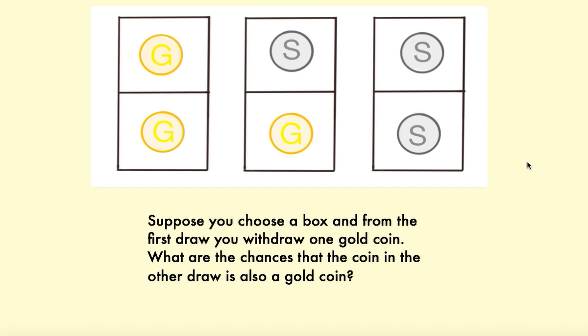Okay, so the intuition—the reason this is called a paradox—is because intuition would tell us that the probability the second coin will be gold is one half.